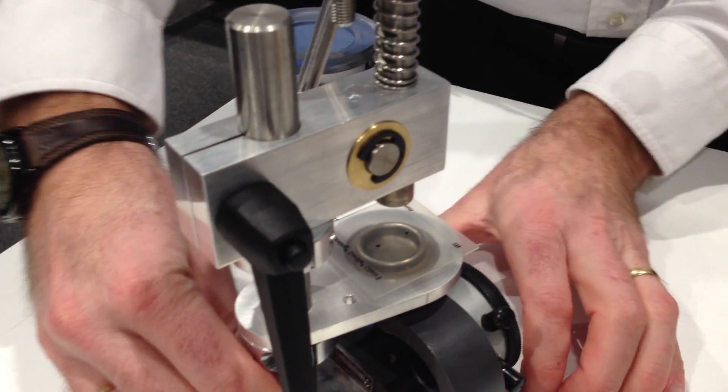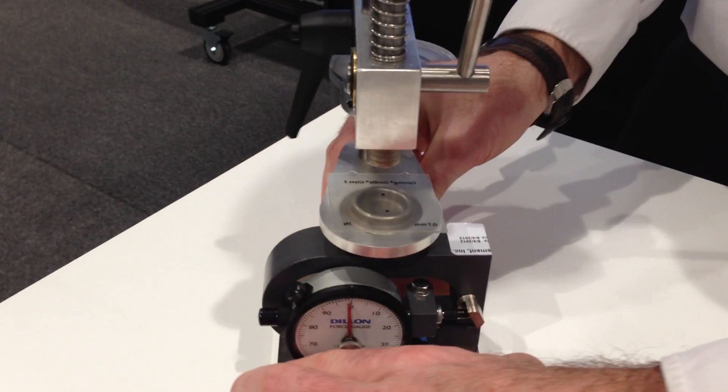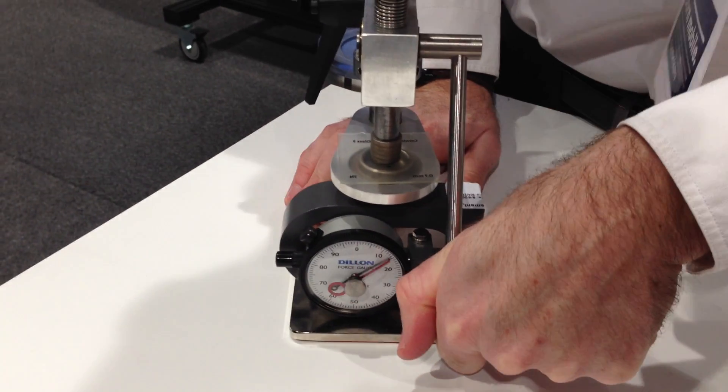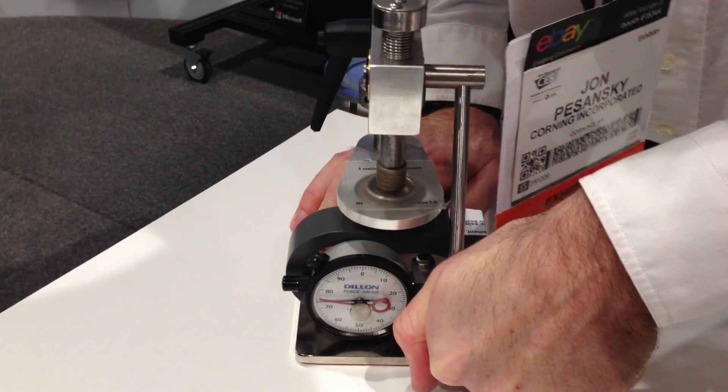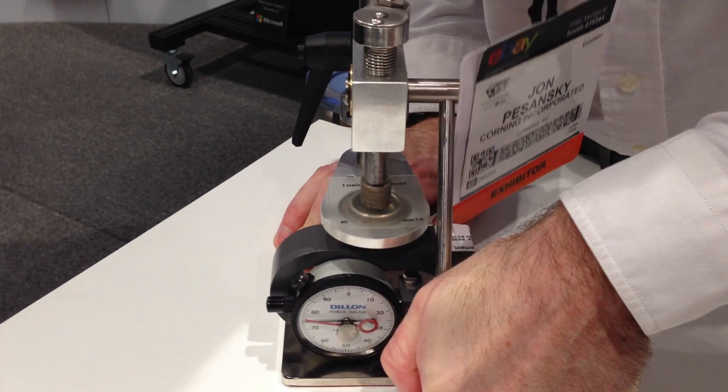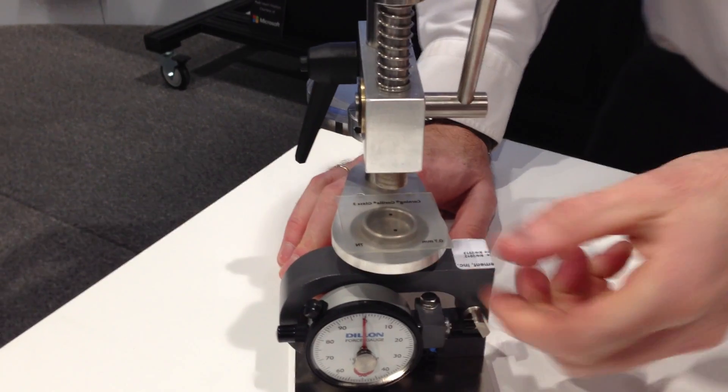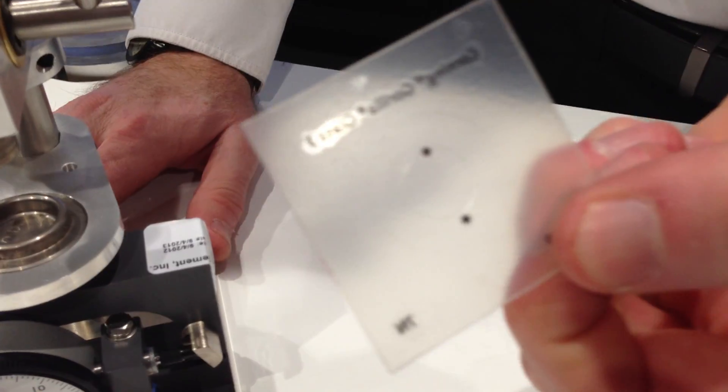I'm going to load this up and spin this around so you can see the dial gauge. I'm going to put a hundred pounds of force on this. And that's with that scratch on there? That's with that scratch on there. All right. Still retaining the strength.